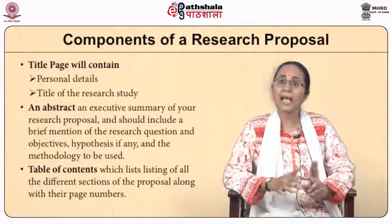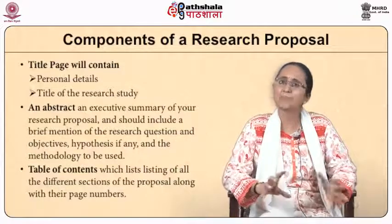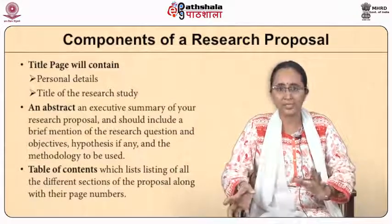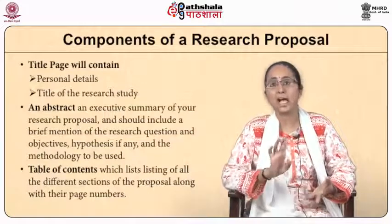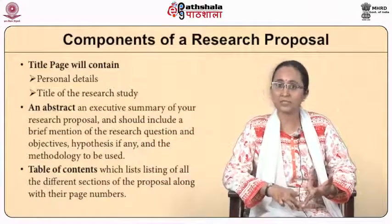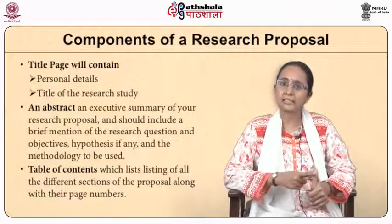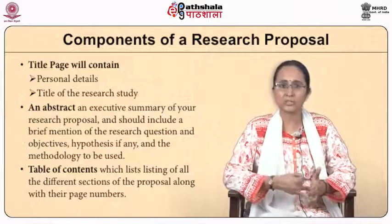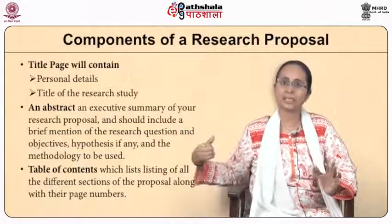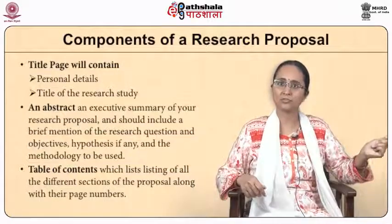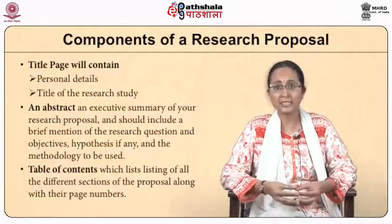An abstract is an executive summary of your research proposal, about 150 to 300 words. It should have a brief mention of the research question, your objectives, hypothesis if it is a quantitative research, methodology in brief, the design, the sample, and research tools. You might write the abstract after you finish writing the entire proposal — then you can pick the relevant information from each of the sections.